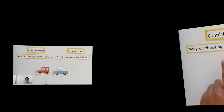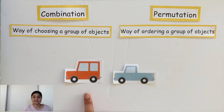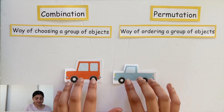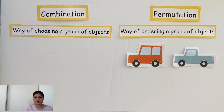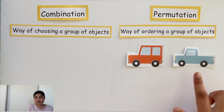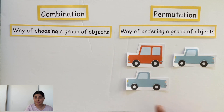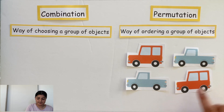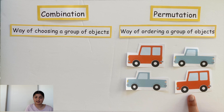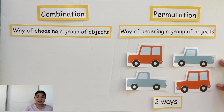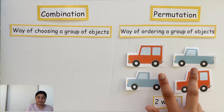Let's take an example. Suppose I have these two cars — this orange car and this blue car — and I want to arrange these cars. Let's start by finding the number of permutations, or the ways that I can order this group of cars. I can either arrange them with the orange car first and the blue car second, or the blue car first and the orange car second. There are two ways of arranging these cars. They're the same cars, but I simply switched the order.